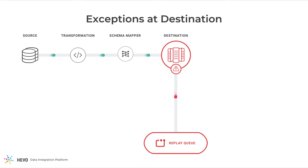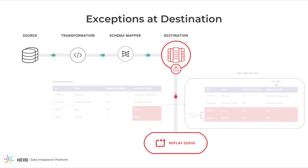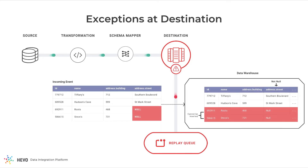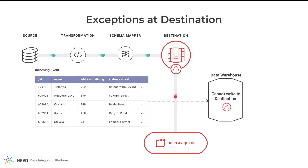At the destination side, there are a few scenarios when an event can be moved to the Replay Queue. If an event contains no or null value for a field that cannot be null in the destination table, then the incoming event will be sent to the Replay Queue. Depending on various situations, the destination might stop accepting writes — this might be due to network failures, disk failures, maintenance windows, etc. Events will be parked in the Replay Queue under such cases.